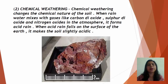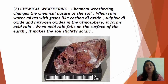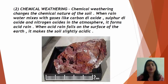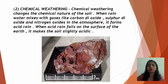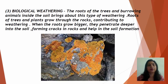The second type of weathering is chemical weathering, which changes the chemical nature of the soil. When rainwater mixes with gases like carbon dioxide, sulfur dioxide, and nitrogen oxides in the atmosphere, it forms acid rain. When acid rain falls on the surface of the earth, it makes the soil slightly acidic. The rock gets destroyed due to the acid rain, gradually becoming weaker and ultimately breaking into smaller pieces to form soil.